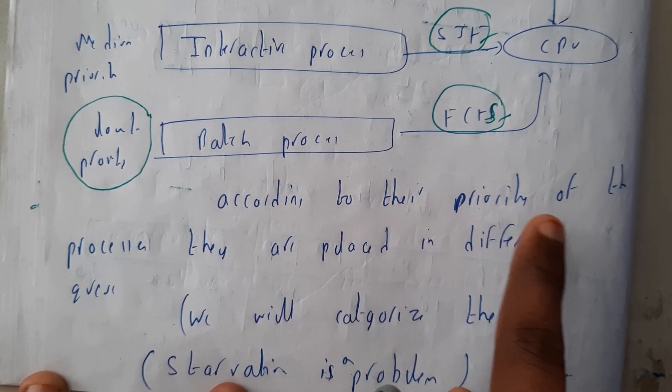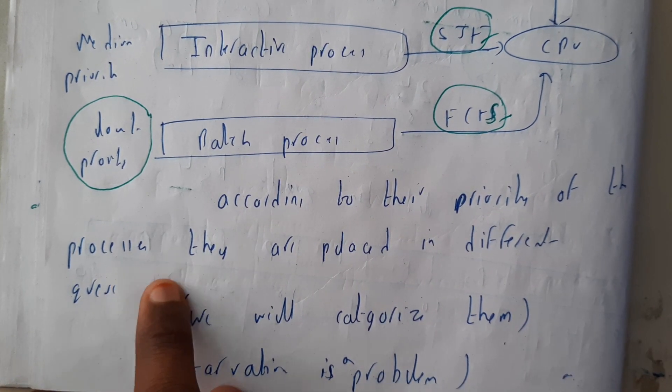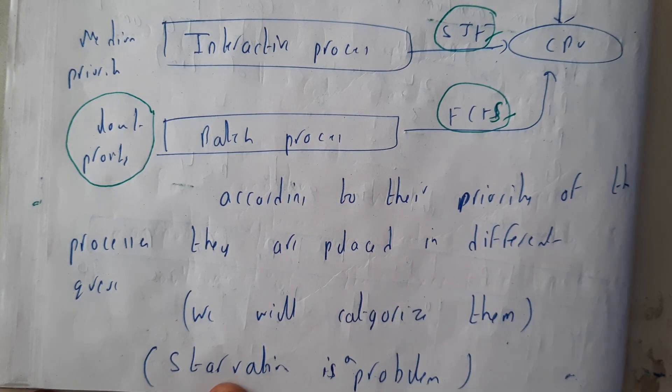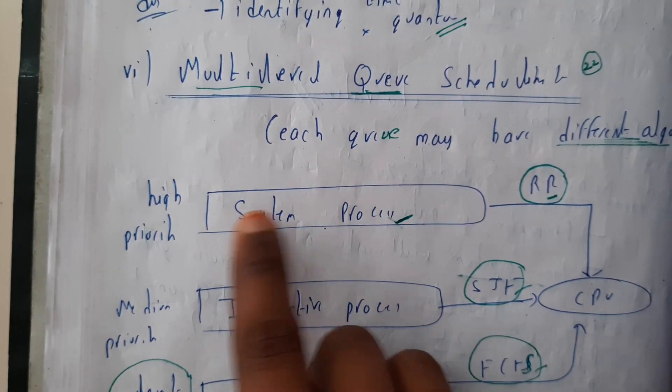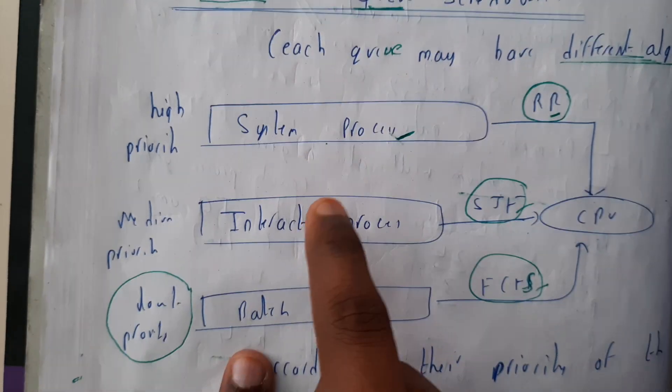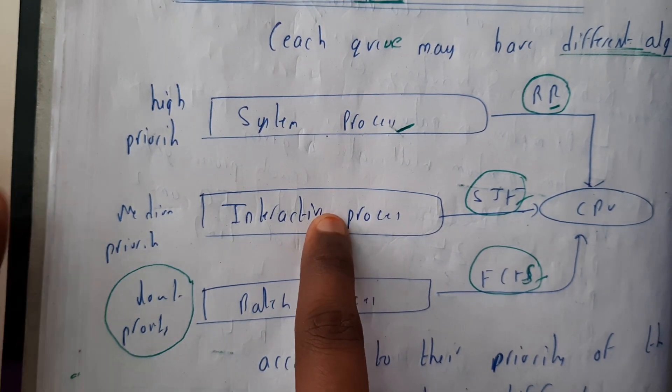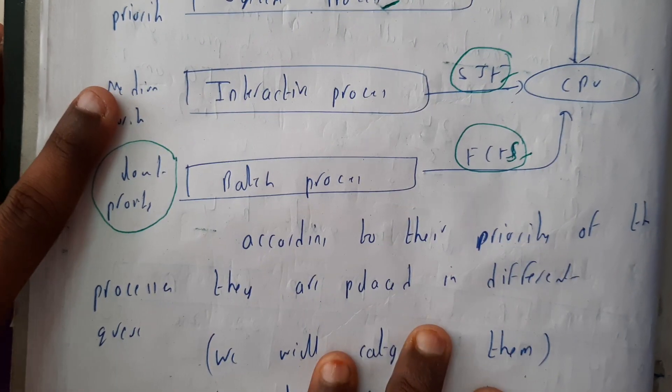According to this priority, the processes are placed in different queues. See, if high priority will be placing here, if it is low priority here, medium priority here. Like that, we can place according to the requirement.